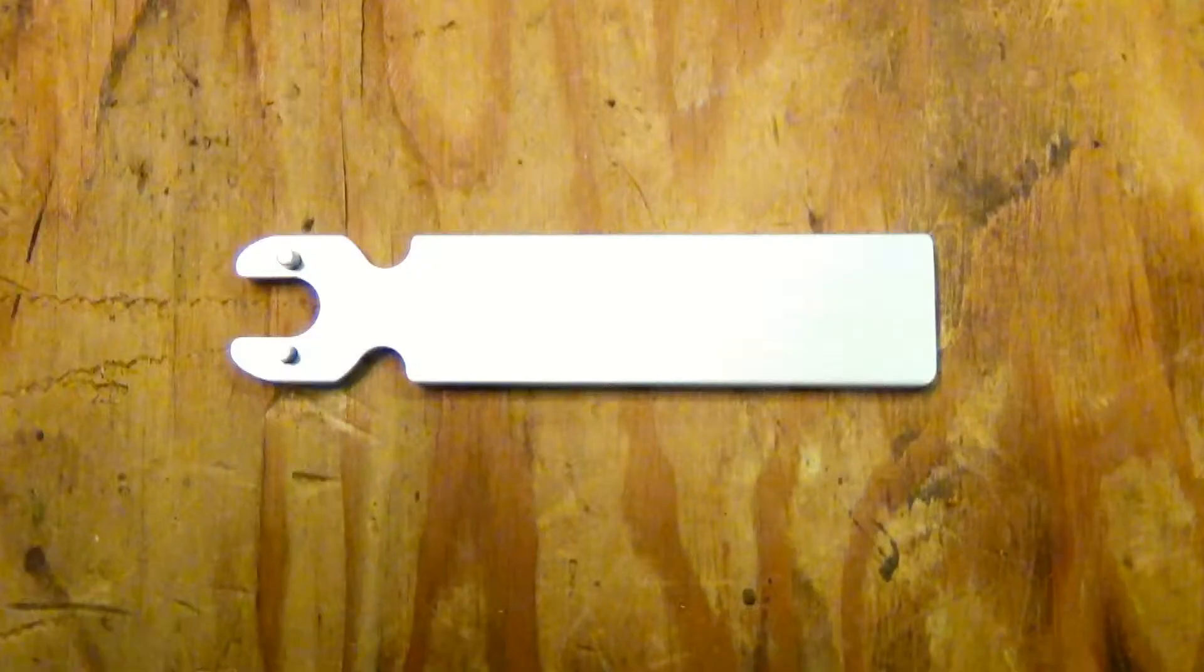A wrench to realign the jaws of the vices is also supplied. We foresee little use of that tool for many years to come, so put it in a safe place where it will be remembered. Adjustment techniques can be found on the Bow Badger website.